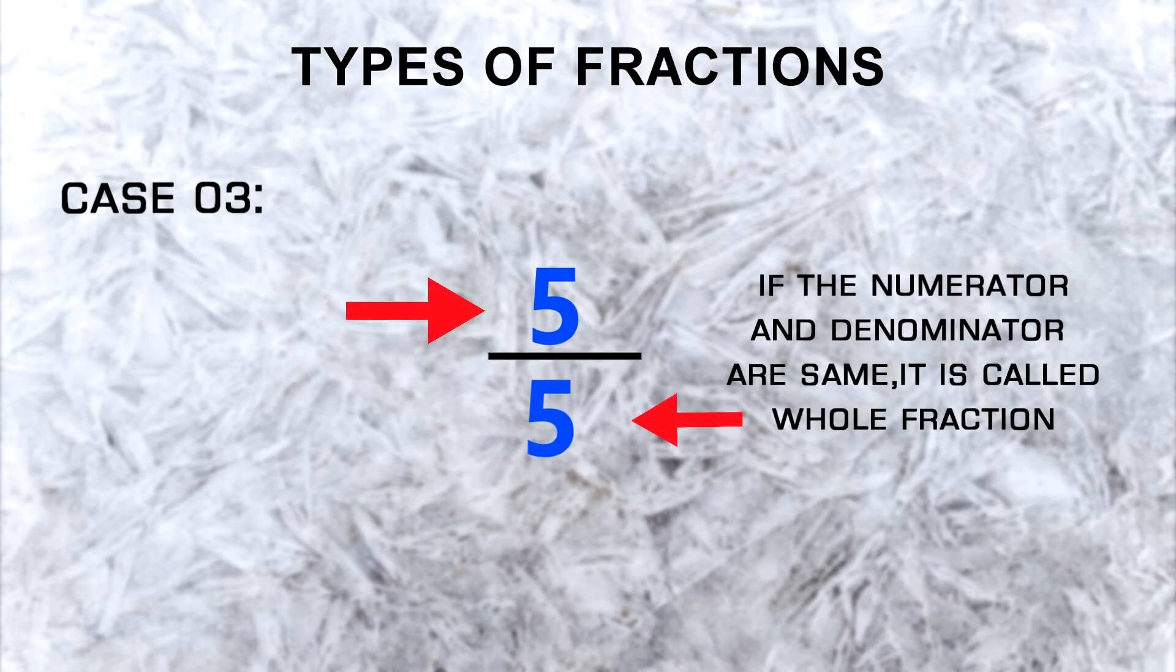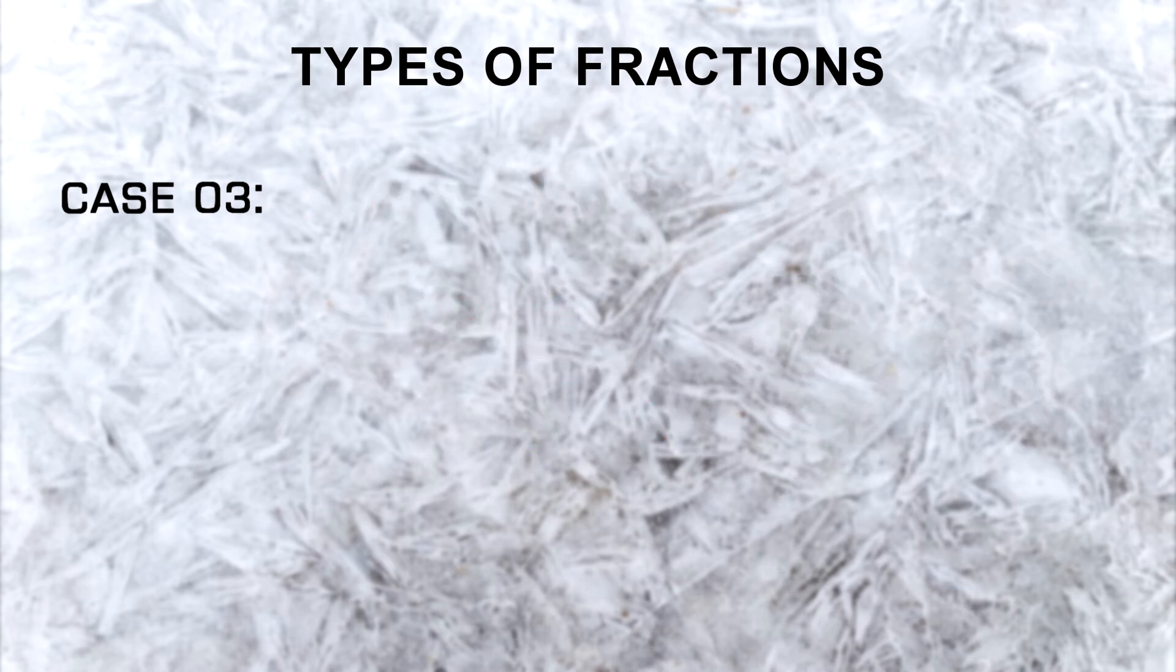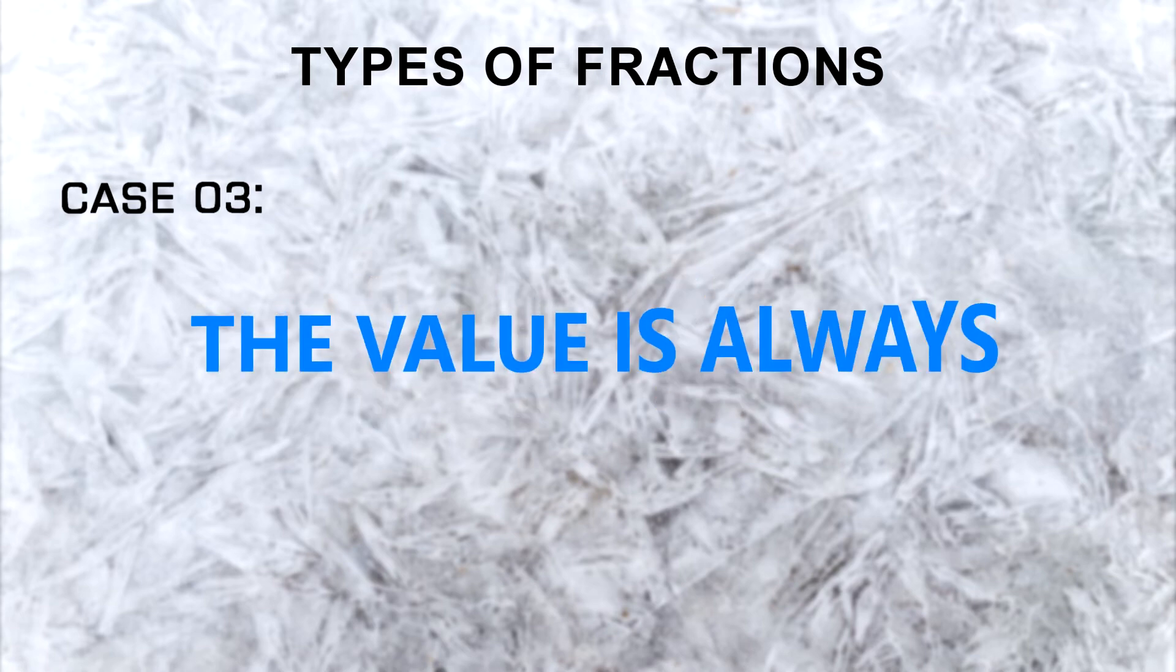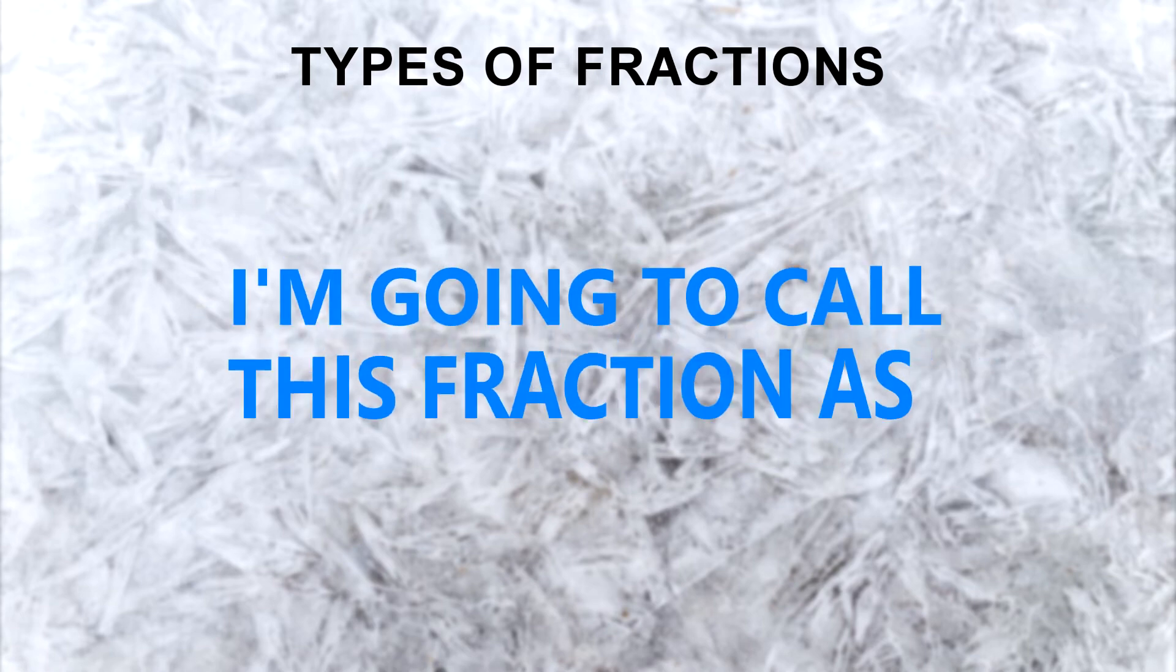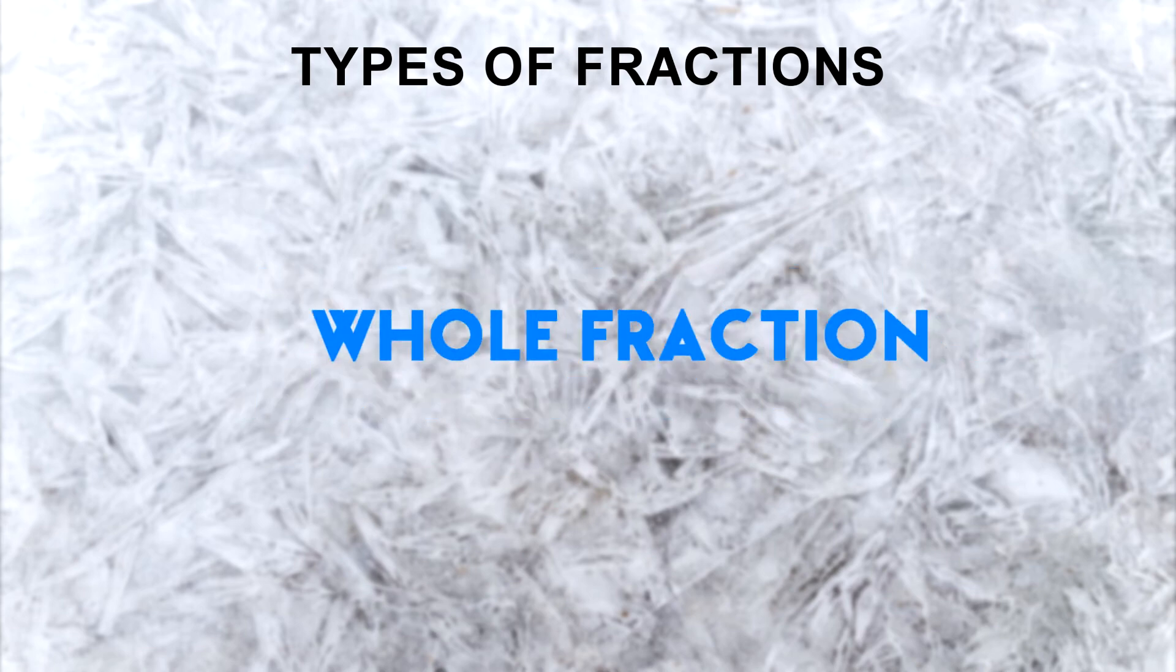The third rule says if the top value and the bottom value are the same, the fraction is called a whole fraction. So whether you have 1 over 1, 5 over 5, or 50 over 50, the value is always just the same, 1. I am going to call this fraction a whole fraction because its value represents 1 whole.